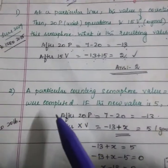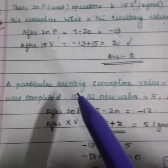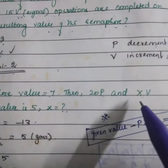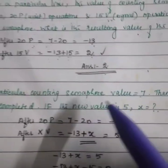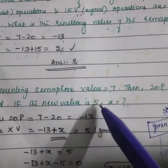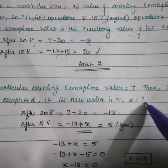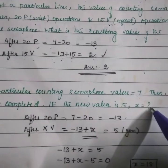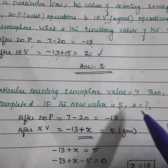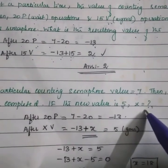Consider the next question: A particular counting semaphore value equals 7. Then 20P and xV were completed. If the new value is 5, what is x? We need to find x. The new value is given, that is, the resulting value is given and we need to find x.